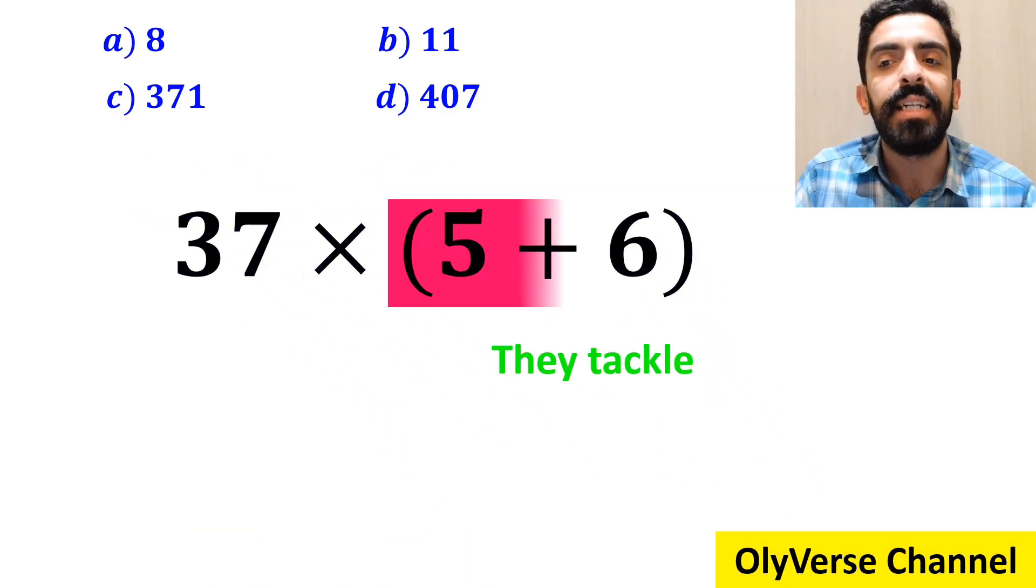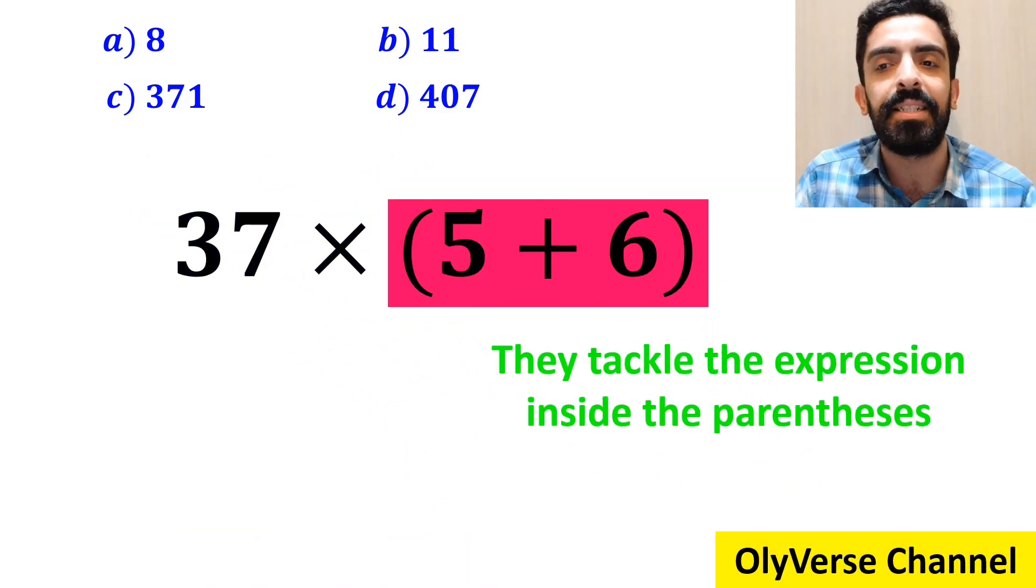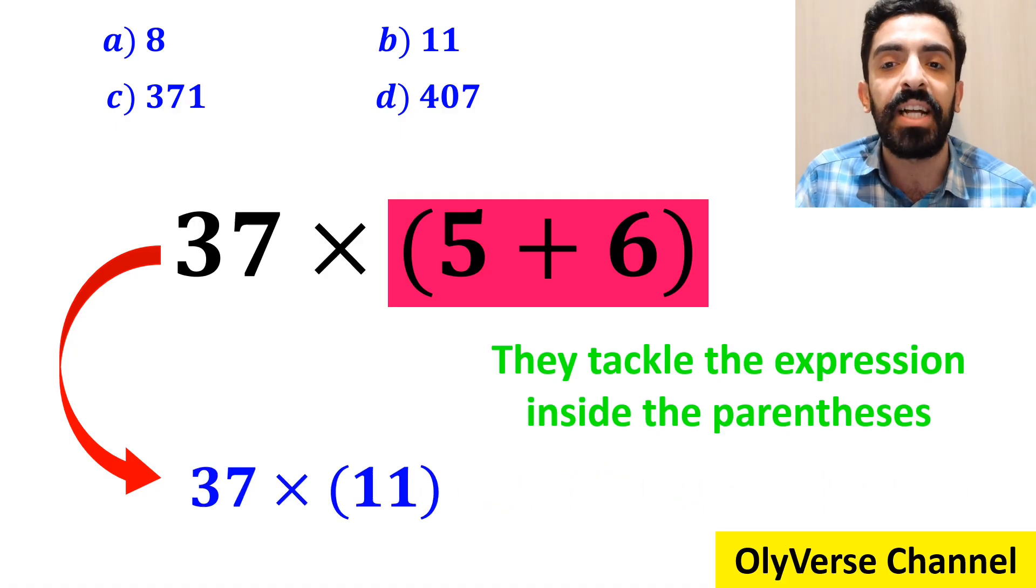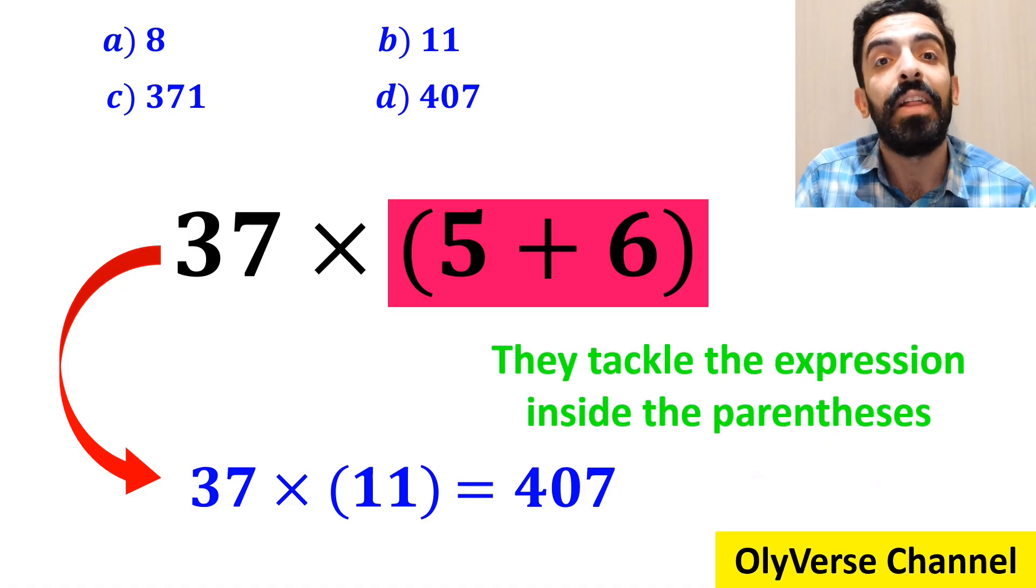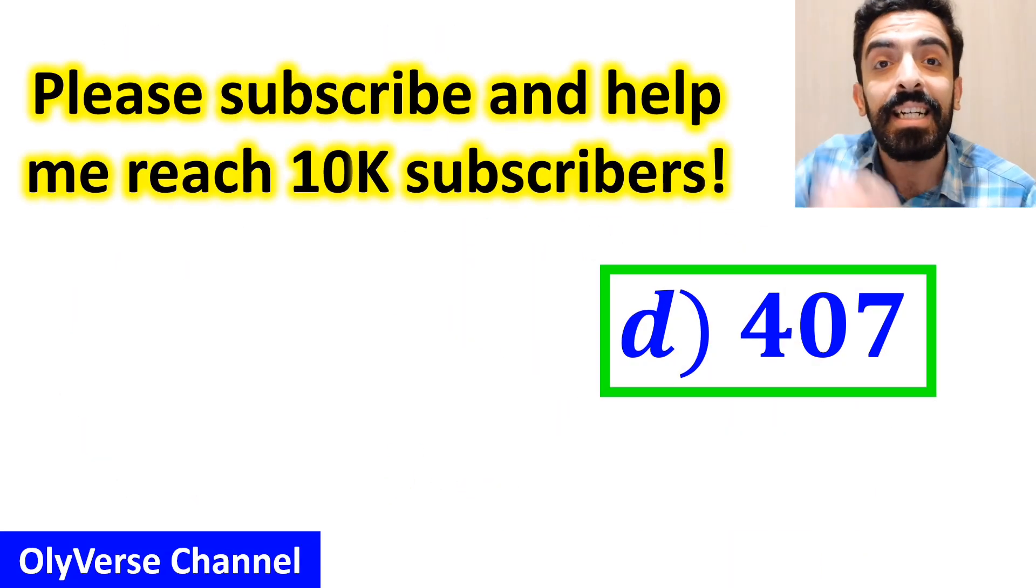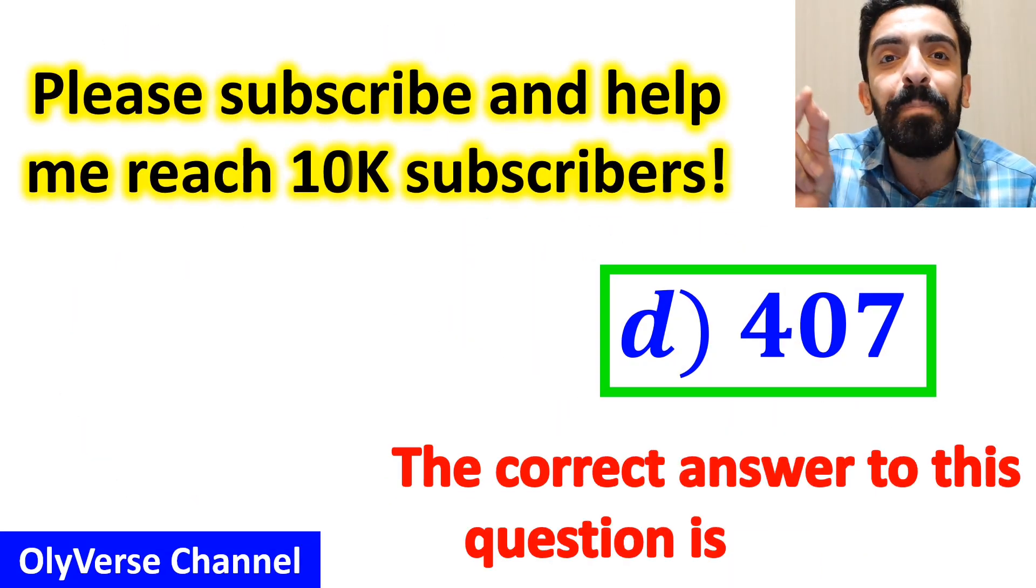And the final step they tackle the expression inside the parenthesis and write it as 37 times 11 which ultimately gives them the answer 407. Then they quickly say that the correct answer to this question is option D.